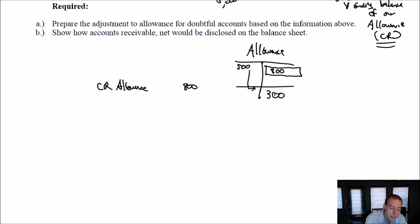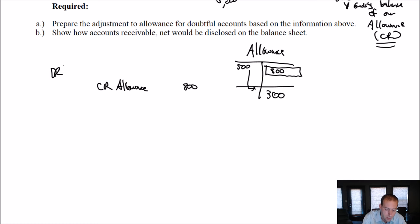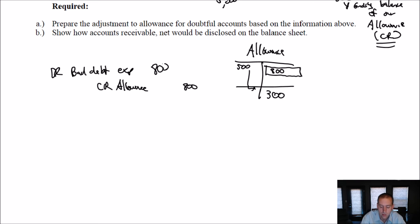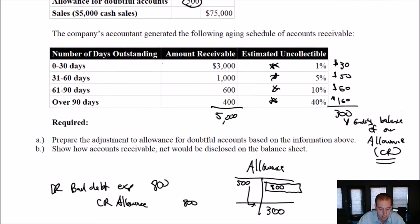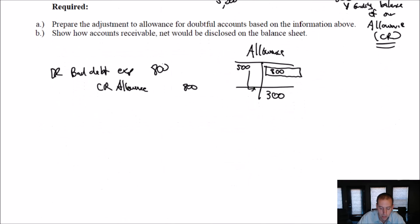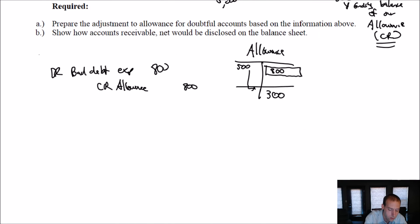What do I debit? We're preparing an adjustment for the allowance — it's the same as with our previous problems. We debit bad debt expense $800 and credit the allowance $800. So we've done the journal entry, dated July 31, 2017.